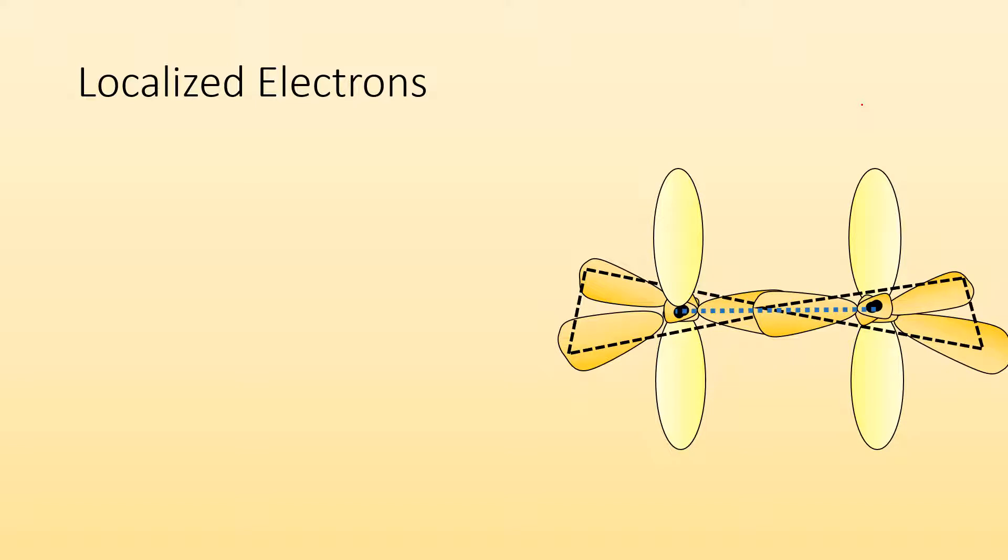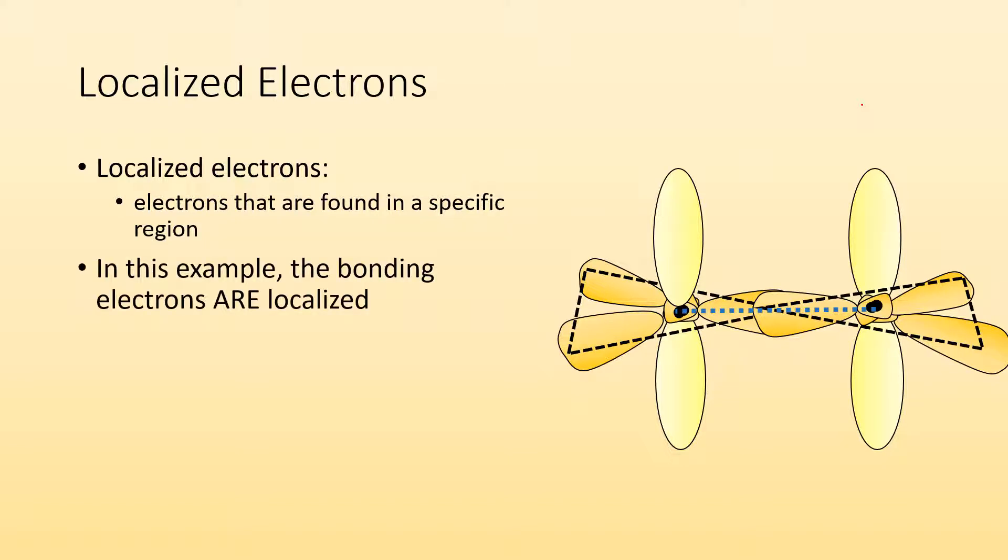What do we mean by localized electrons? Let's start there. Localized electrons are electrons that are found in a specific region. In this example, the bonding electrons are localized. You'll find the sigma bonding electrons along that internuclear axis. That's where they are, that's where you're going to find them.